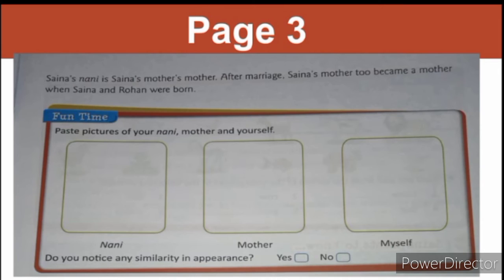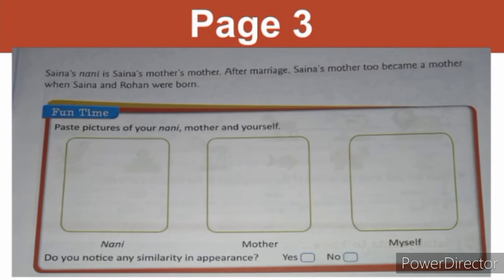Now it's fun time. There is a box in your book titled 'Fun Time.' You have to paste pictures of your nani, mother and yourself in the boxes given. Then the question asks: Do you notice any similarity in appearance? Similarity means the things which are the same. You have to see any similarity in appearance among your nani, mother and yourself, and simply tick yes or no. There must be similarity in all three of you, so put a tick mark in 'Yes.' Your mother resembles your nani, and you resemble your mother.